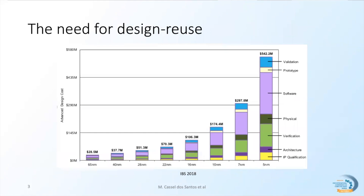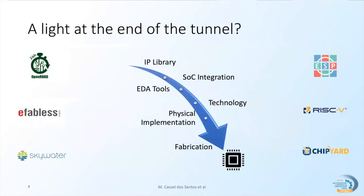The complexity of heterogeneous architecture design increased design costs exponentially. Although major semiconductor companies can minimize this issue by leveraging design reuse, the same is not true for startups and academia. In recent years, the emerging open source hardware movement is addressing this design complexity challenge by promoting design reuse.